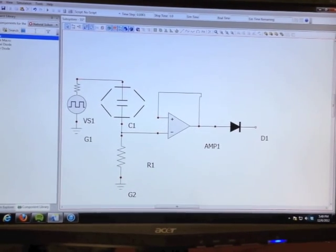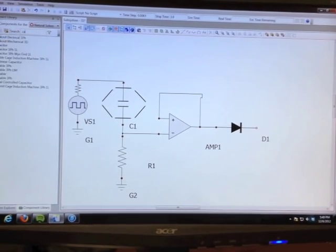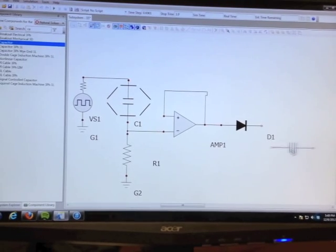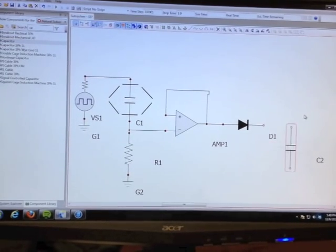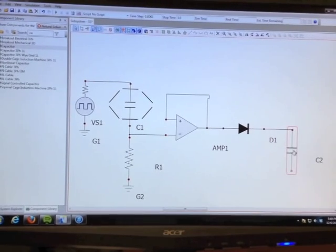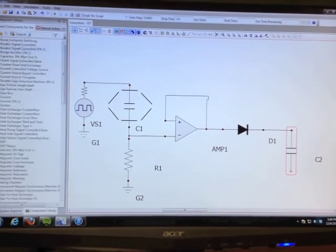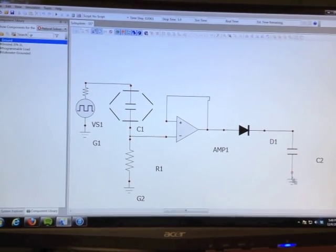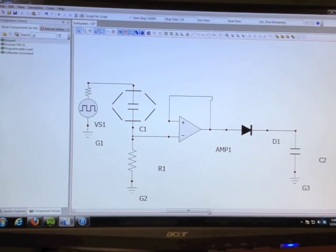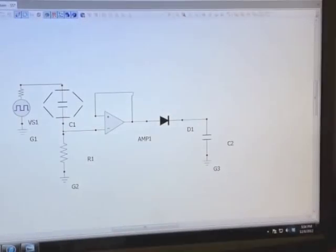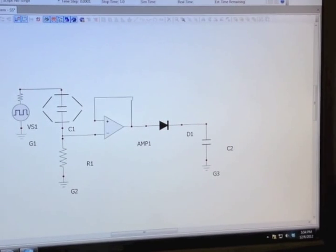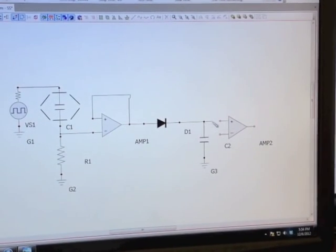Connected in series with this buffer is an IN914 diode to ensure there is no backflow. This diode is in parallel with a grounded capacitor that makes up the peak hold detector subsystem of the circuit. This is used to hold the voltage long enough to be read by the Arduino board.